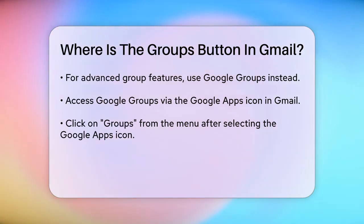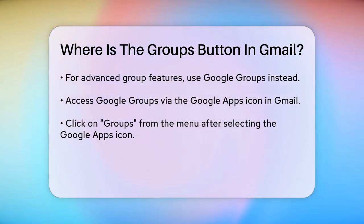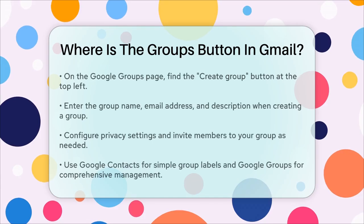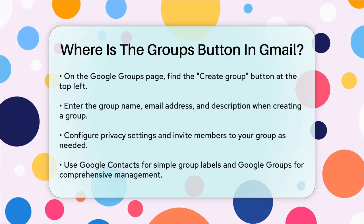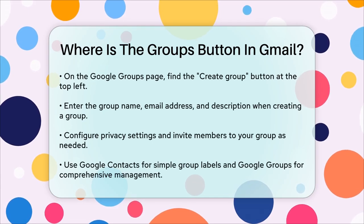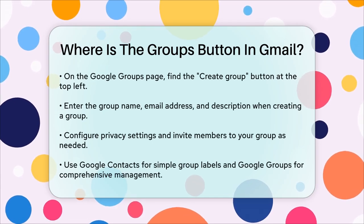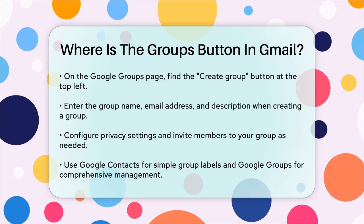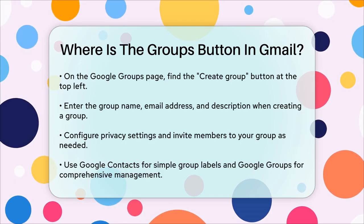Once you're on the Google Groups page, you'll see a 'Create Group' button at the top left. Clicking this button will allow you to set up a new group, including entering a group name, email address, and a brief description. You can also configure privacy settings and invite members to your group.